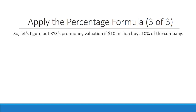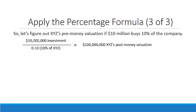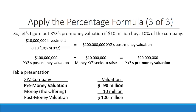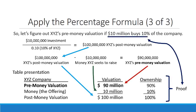So let's apply the percentage formula. We're going to figure out XYZ's pre-money valuation using $10 million for 10% of the company. We divide the $10 million investment by 10% to get the post-money valuation of $100 million, then subtract the amount of money to be raised — $10 million — and we have XYZ's pre-money valuation of $90 million. In a table presentation, we can see the pre-money valuation of $90 million plus the money of $10 million to get a post-money valuation of $100 million. The ownership split amounts to a proof because the question is: what is the pre-money valuation if $10 million buys 10% of the company?